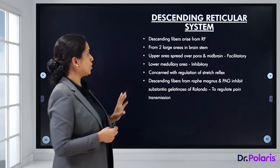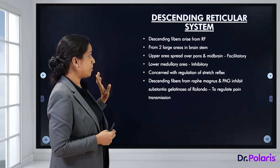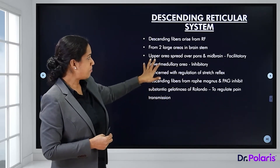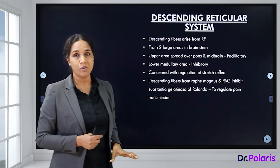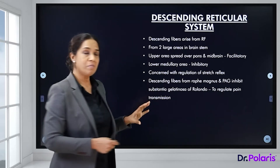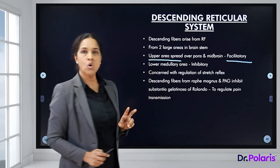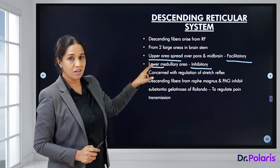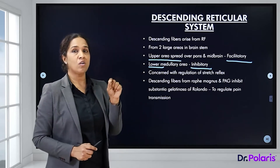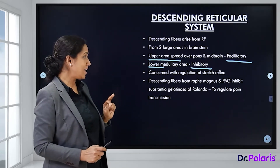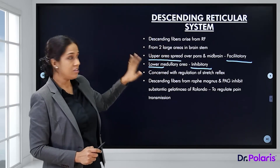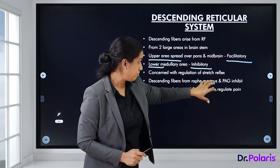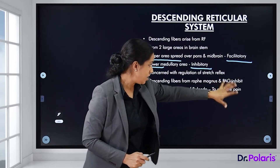The descending reticular system arises from the reticular formation in two large areas of the brainstem: an upper area spread over the pons and midbrain, which is facilitatory, and a lower medullary area, which is inhibitory. The descending reticular formation is concerned with the regulation of the stretch reflex, and descending fibers come from the raphe magnus and the periaqueductal gray (PAG).